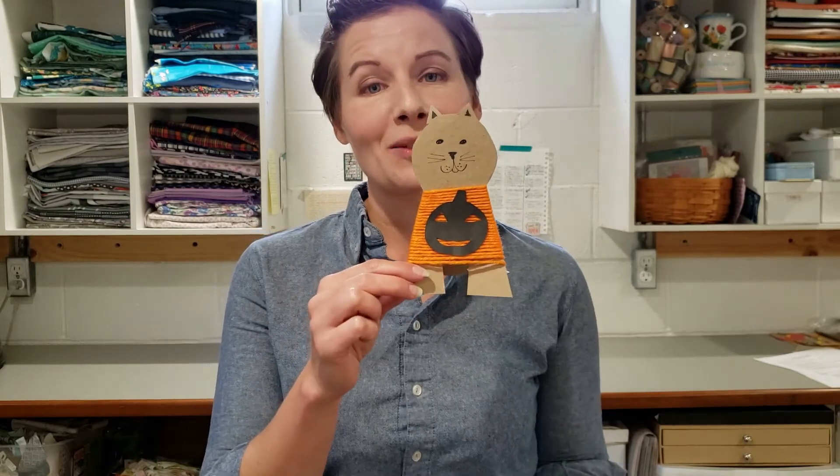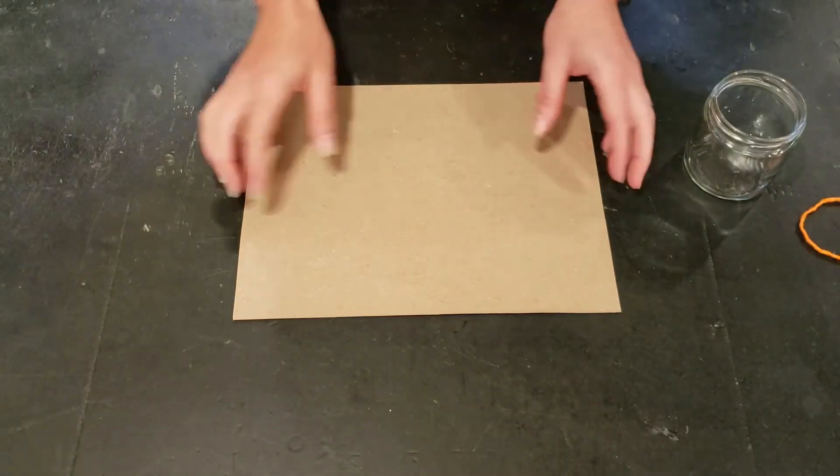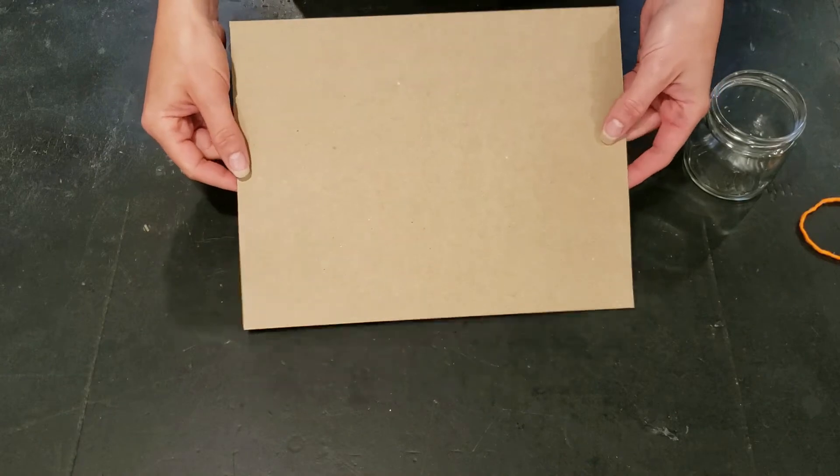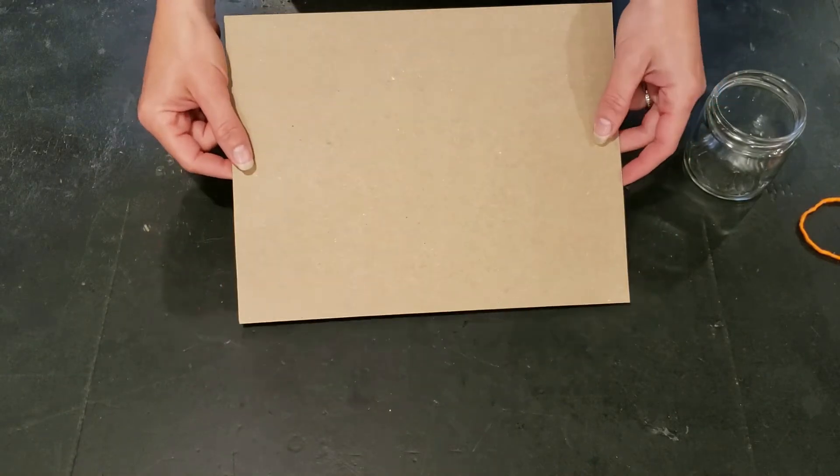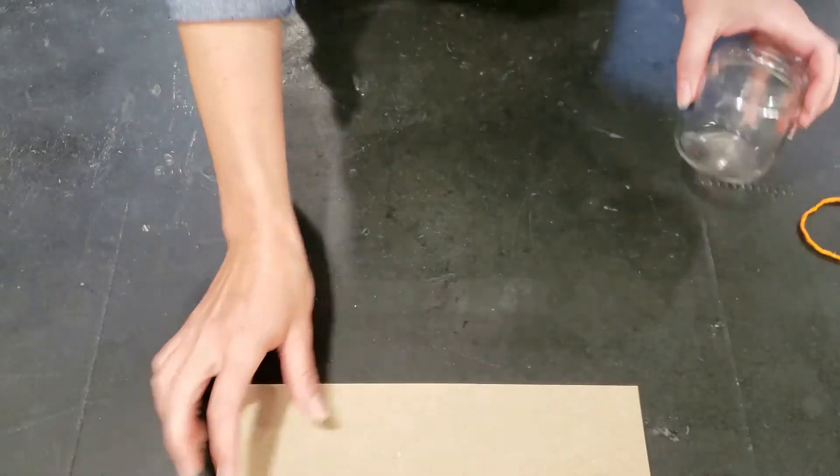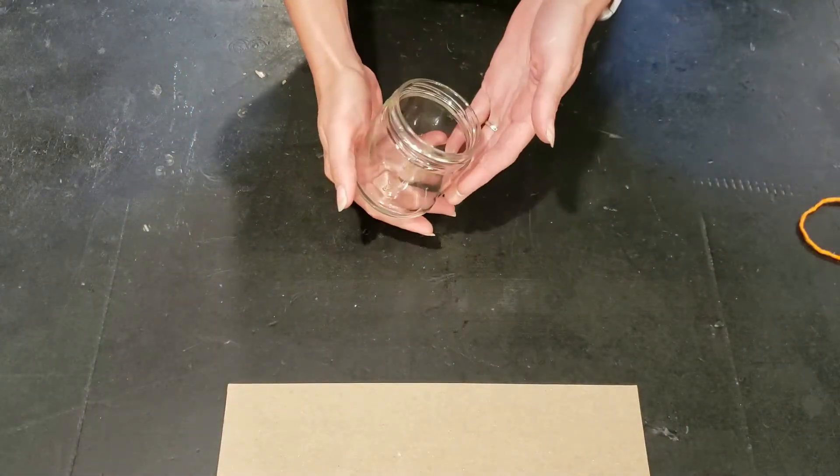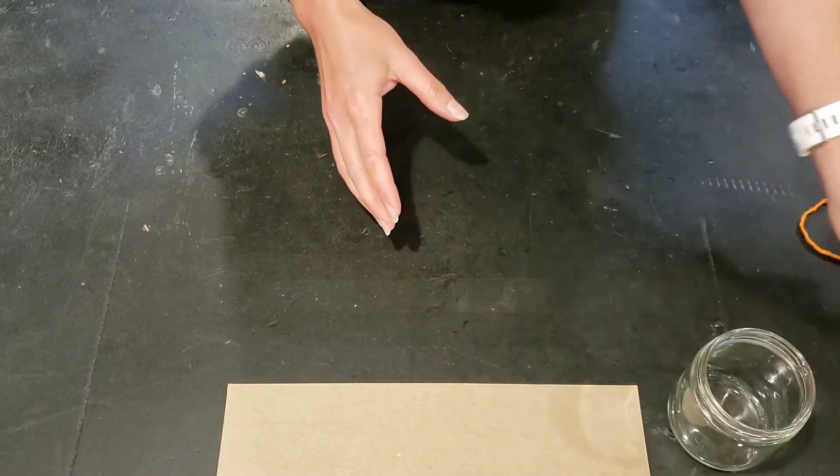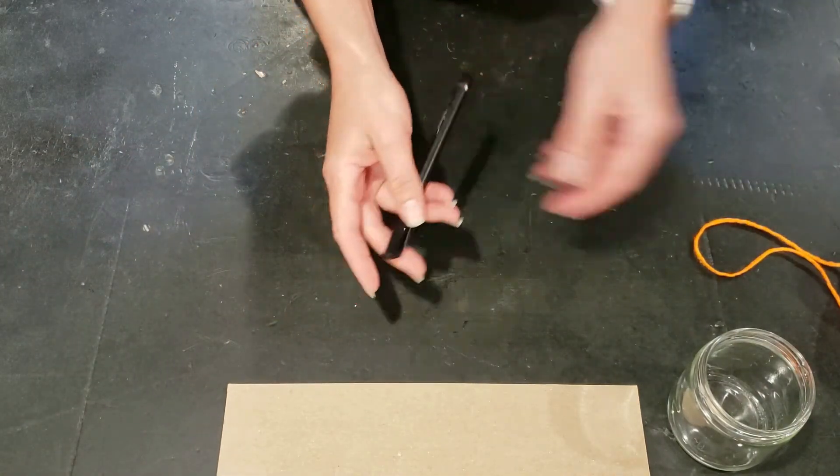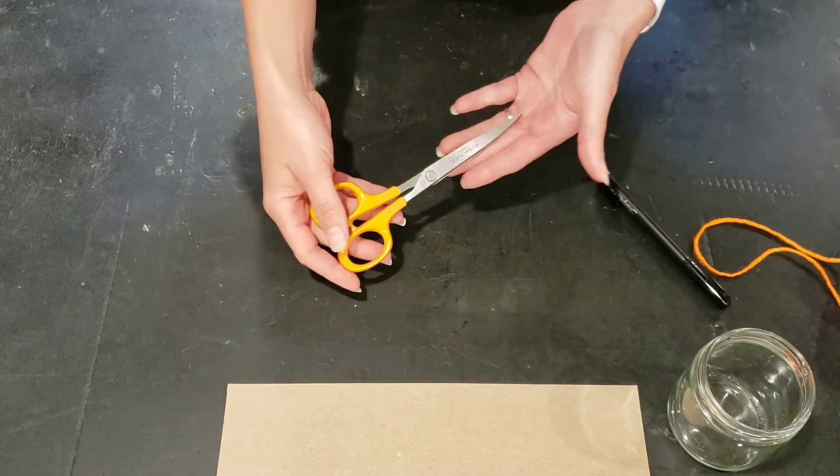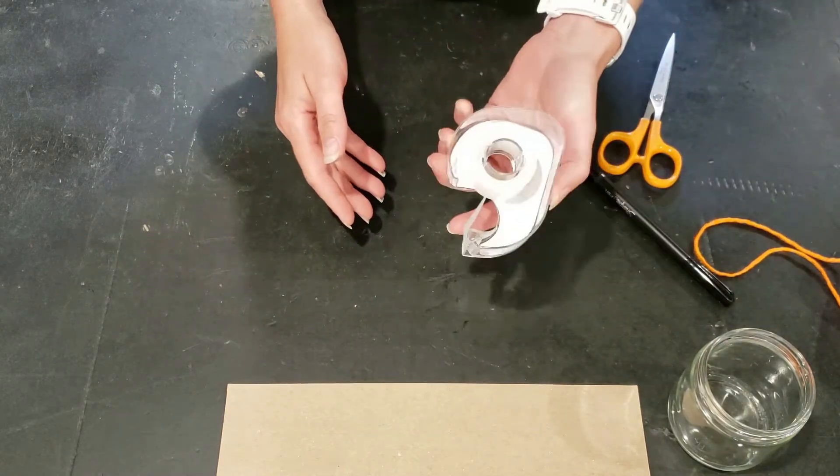Here come the supplies for today's project. You will need a piece of thin cardboard—recycled cereal boxes work perfectly for this—a jar if you'd like to have a template to trace, a ball of colorful yarn, a black marker or pen, a pair of scissors, and some tape.